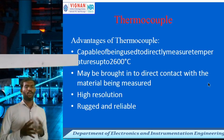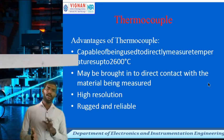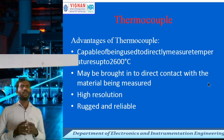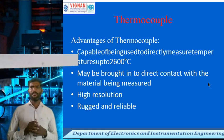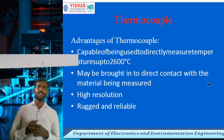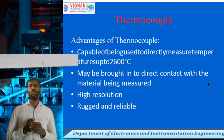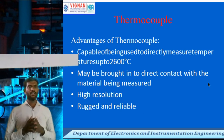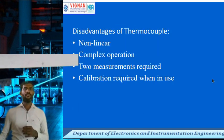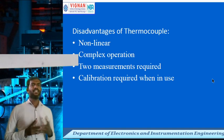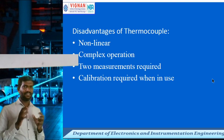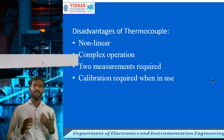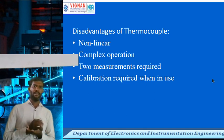Thermocouple is formed with two dissimilar metals — there is a hot junction and cold junction, and temperature differences are analyzed. Thermocouple is capable of directly measuring temperature, measuring up to 2600 degrees, and may be brought into direct contact with the material being measured. It has high resolution, rugged construction, and is more reliable. Disadvantages: it is a non-linear type, has complex operation, two measurements are required, and calibration is also required whenever it is used.